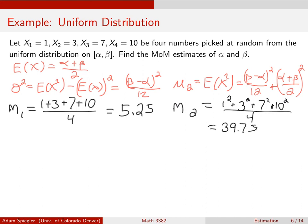So now we've got our two simultaneous equations that we would need to solve. The first, by taking the first theoretical moment, so that would be alpha plus beta over 2, and we set that equal to the first sample moment, which was 5.25.